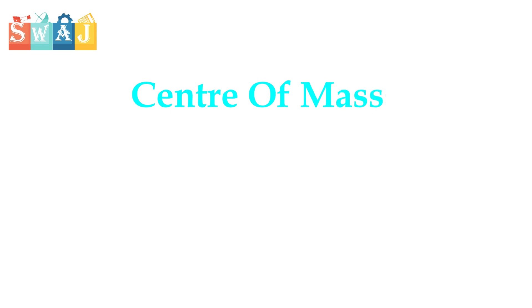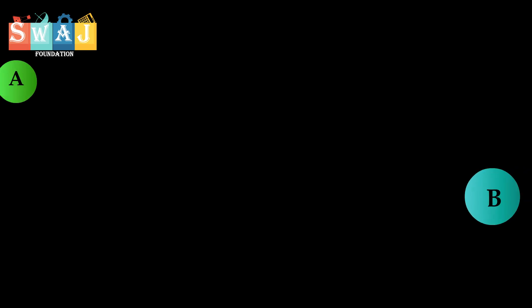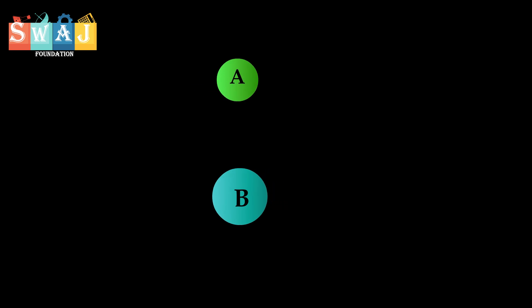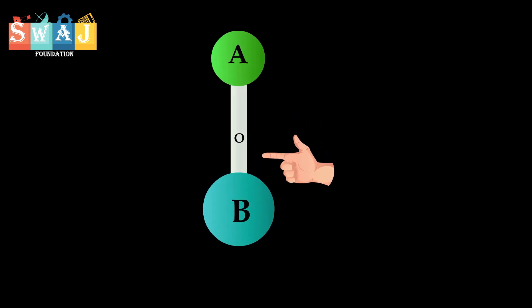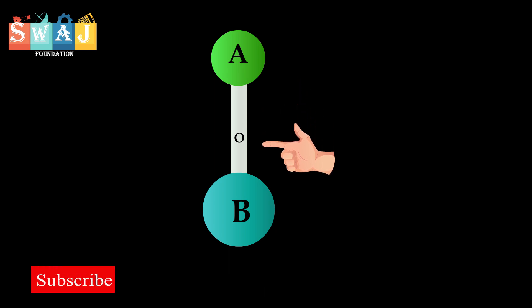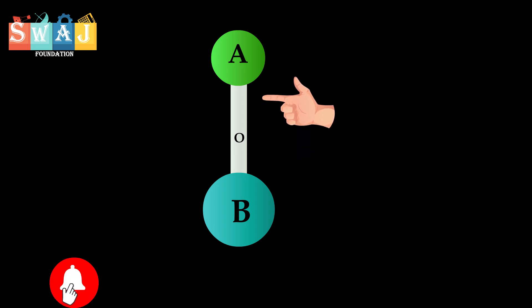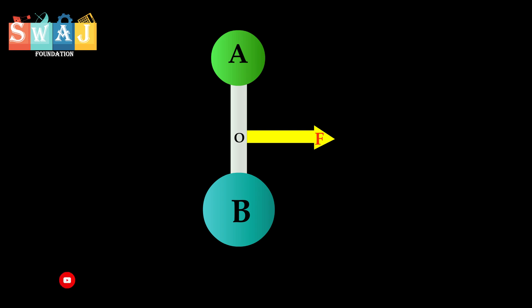What is center of mass? Consider a system of two particles A and B connected by a rigid rod as shown in figure. Let O be a point anywhere between A and B such that the force F is applied at point O.